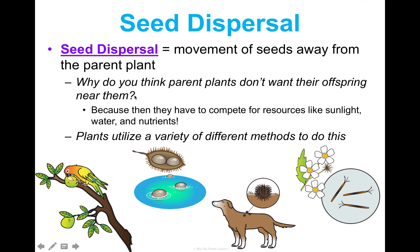There are different methods for seed dispersal. Different organisms can eat the fruit containing the seeds, then fly or walk away and spread them elsewhere as they release waste. Seeds can also travel via water, via wind, or attach onto an organism and be spread that way. There are many different methods by which plants spread their seeds in order for them to germinate away from the parent. And that is your overview of plant reproductive strategies.